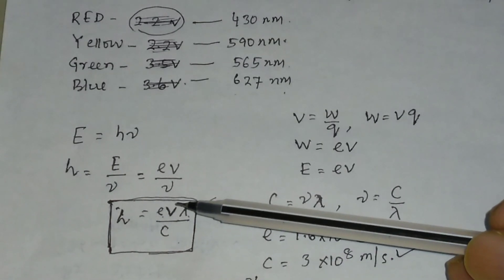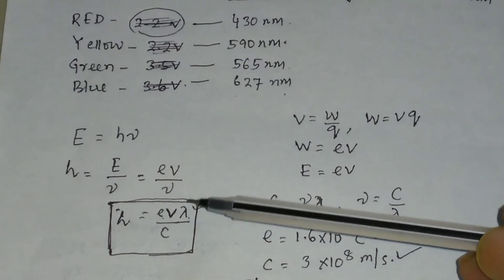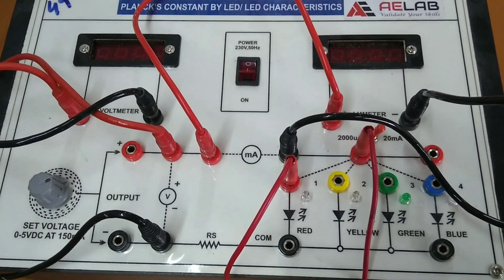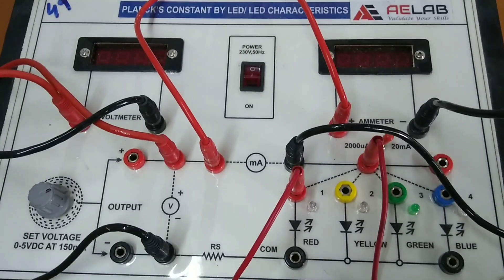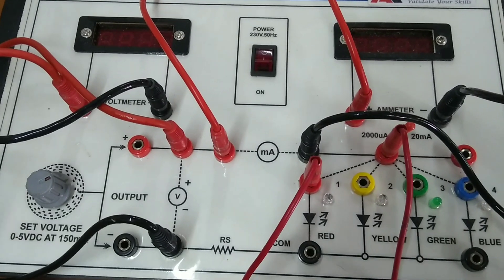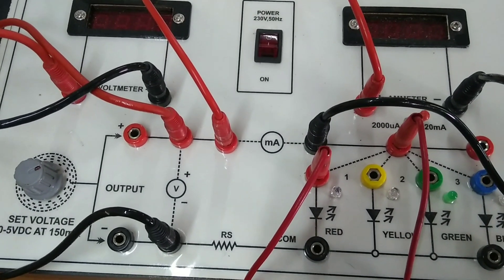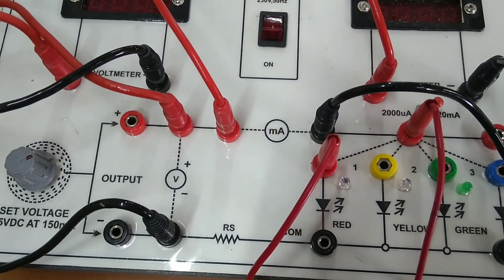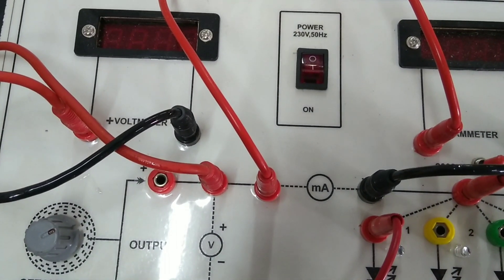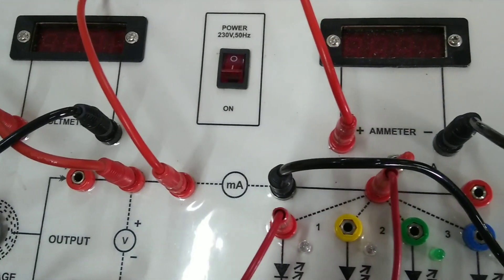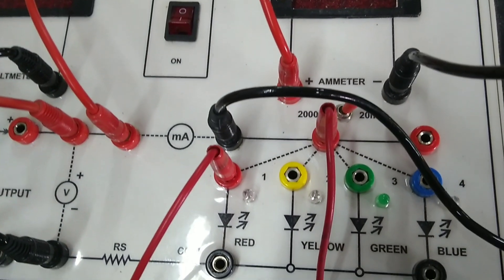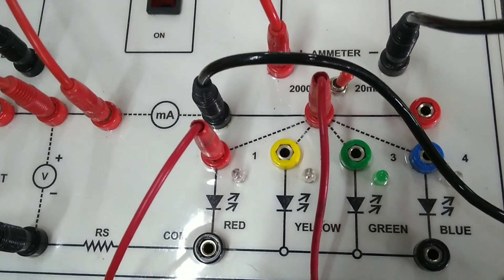To find the value of Planck's constant, we need to determine the threshold voltage. This is your trainer kit for finding Planck's constant using four LEDs — red, yellow, green, and blue. You have a voltmeter and an ammeter, and the circuit shown is just a forward biased diode.